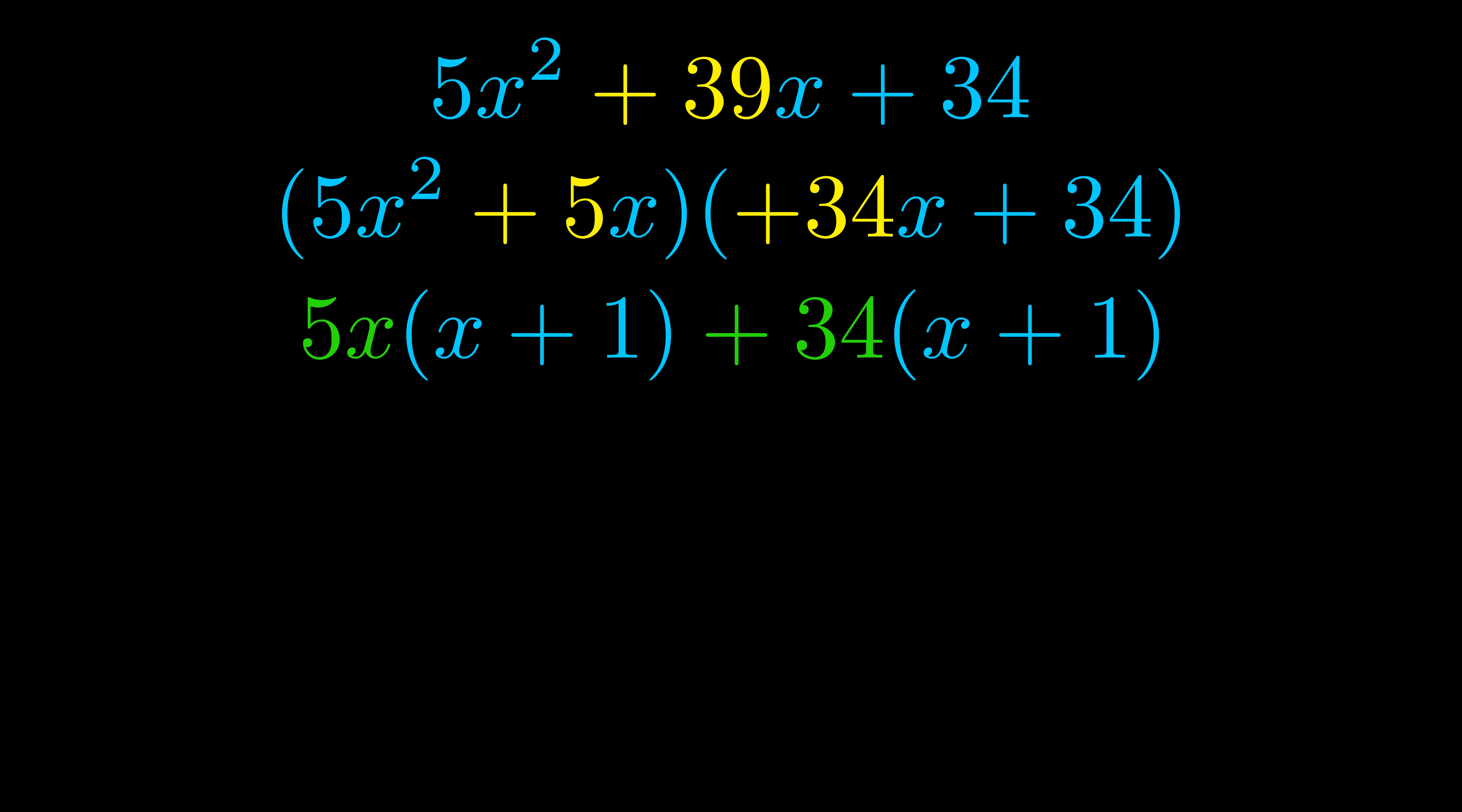Notice also how what remains inside of the parentheses is the same in both cases. The blue values are the same. Those blue values will become one of our factors and we will combine the two green values, the GCFs that we pulled out, to get the other one. And that is our fully factored equation.